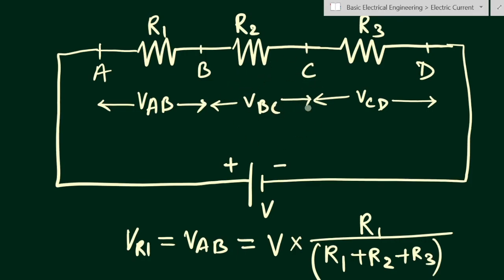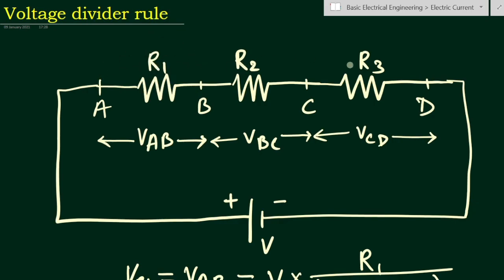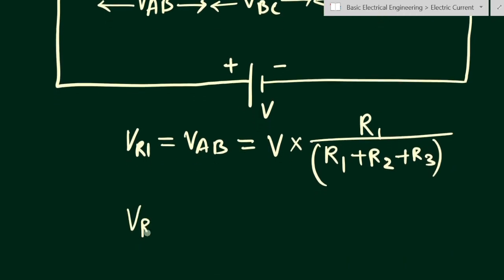This circuit is called a voltage divider circuit. It can be used in cases where we need multiple voltage values but have only one source of voltage. Using resistors we can change the voltage drop across two points and take connections from there to feed another circuit. For example, if a bulb is connected across points a and b, we can adjust the R1 value to get whatever voltage is required.